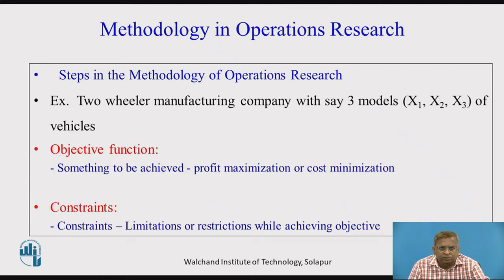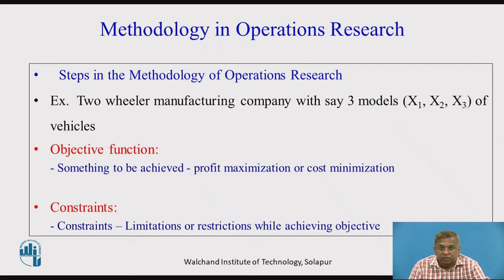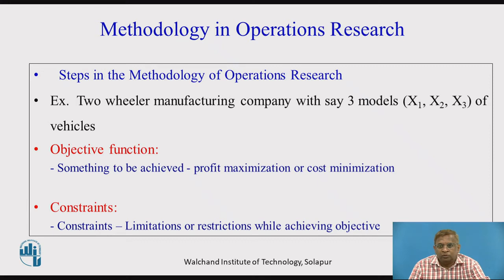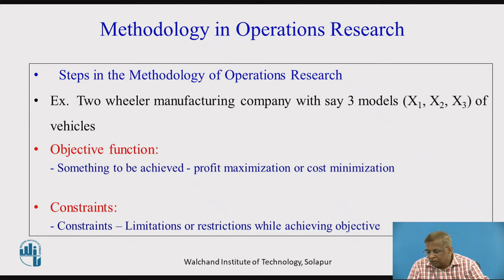Let us take one small example so that you can understand how it can be applied in a given situation. We will consider a very common example of a two-wheeler manufacturing company. Let us presume there are three models only, for the sake of mathematical discussion — otherwise there could be more than three also. So, two-wheeler manufacturing company having three models of two-wheelers. Here the mathematics begins — we are denoting these three models with the symbols x1, x2, and x3.